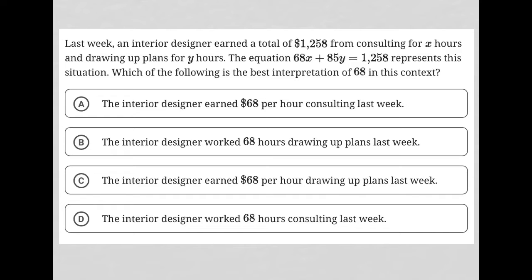This question says last week, an interior designer earned a total of $1,258 from consulting for X hours and drawing up plans for Y hours. So whatever was paid for the hours of consulting plus whatever was paid for the hours of drawing up plans all ended up with total earnings of $1,258.